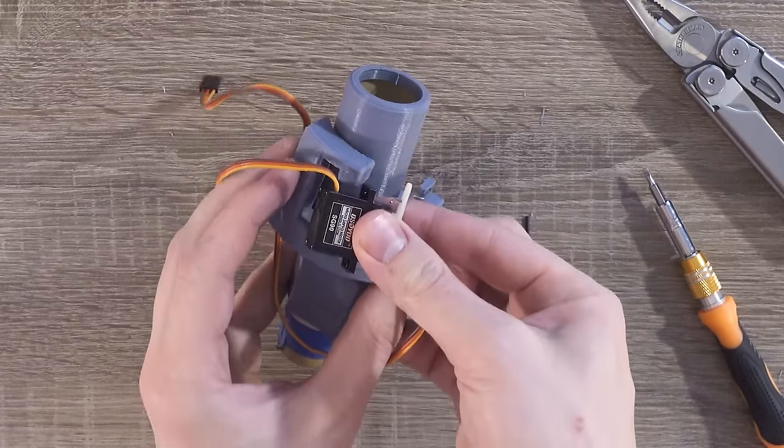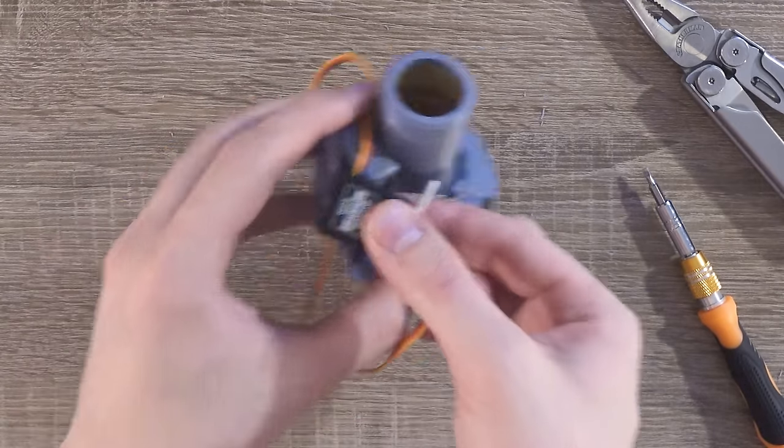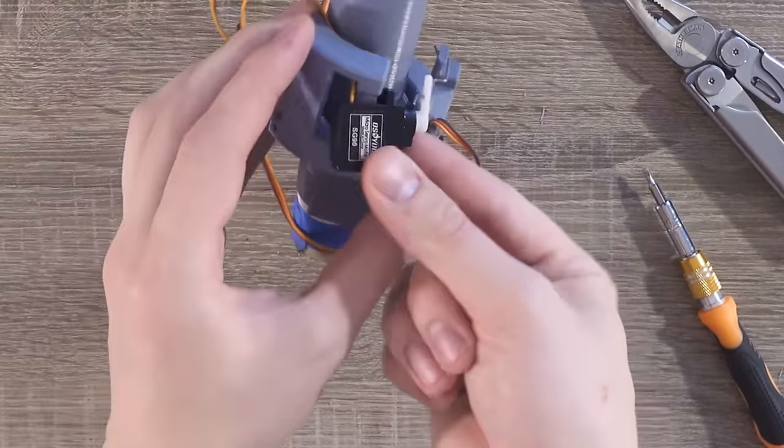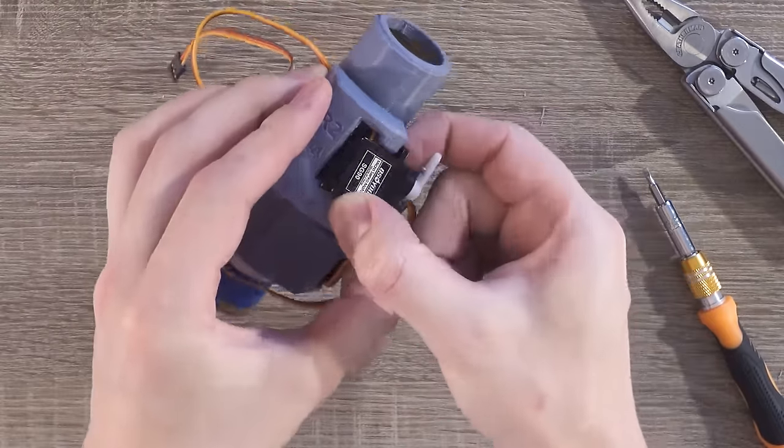You want to make sure that the servo cable is threaded inside the mount and not outside, or it will interfere with your rocket's airframe.